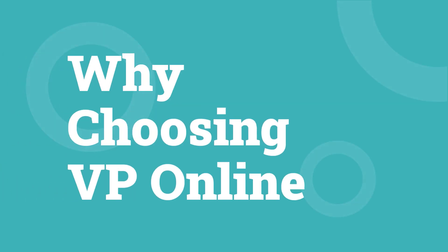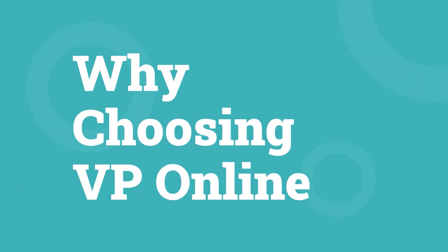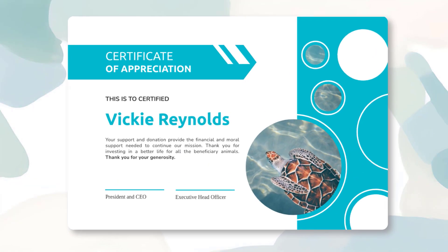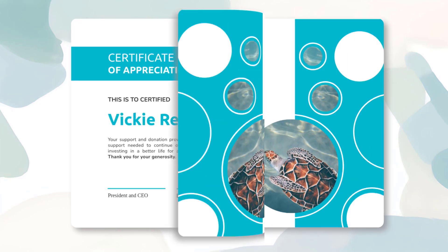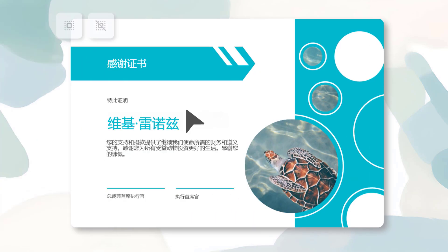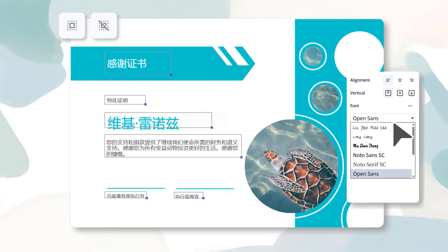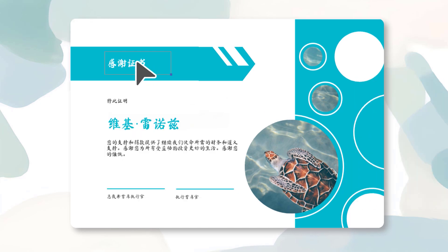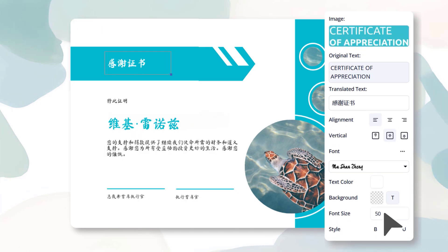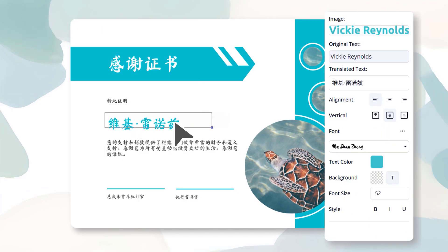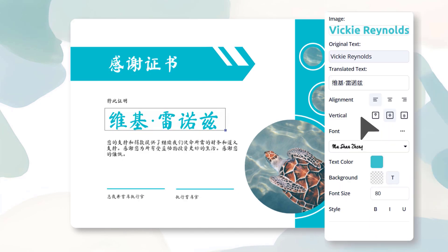It is more than just a basic translation tool. It combines professional editing features with AI-powered translation. You can adjust the position, alignment, font, size, and more to make the final result look polished and natural.